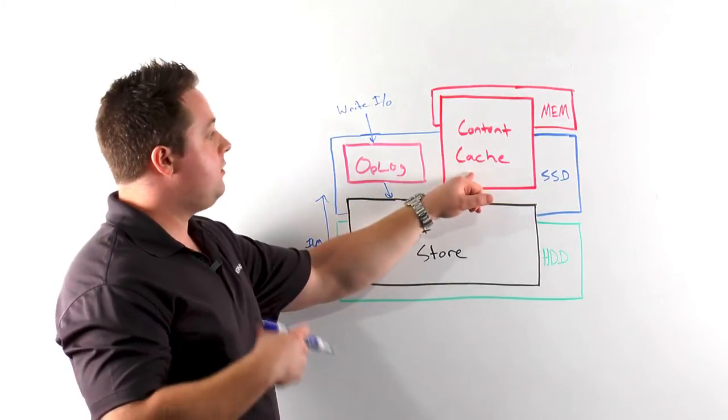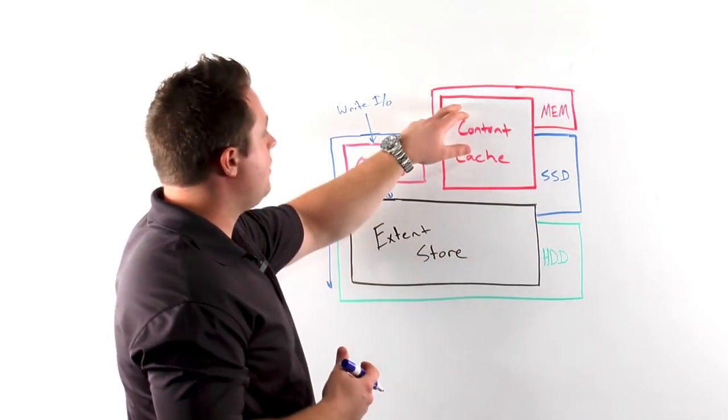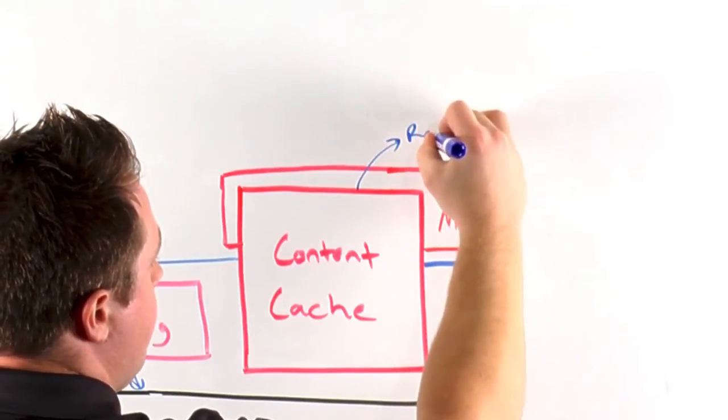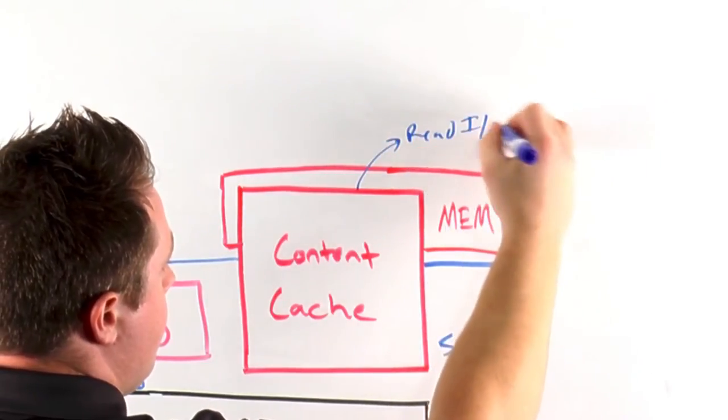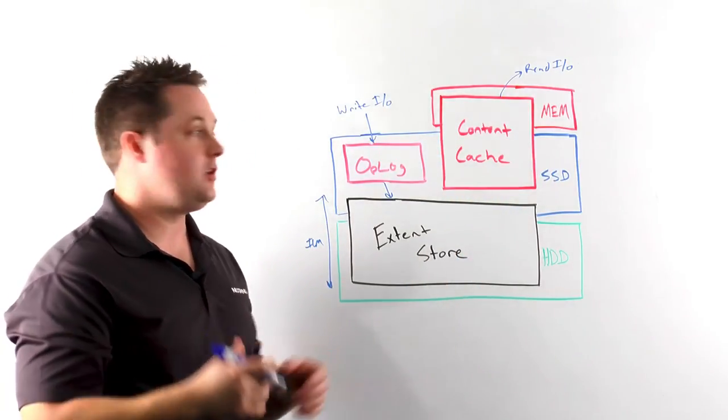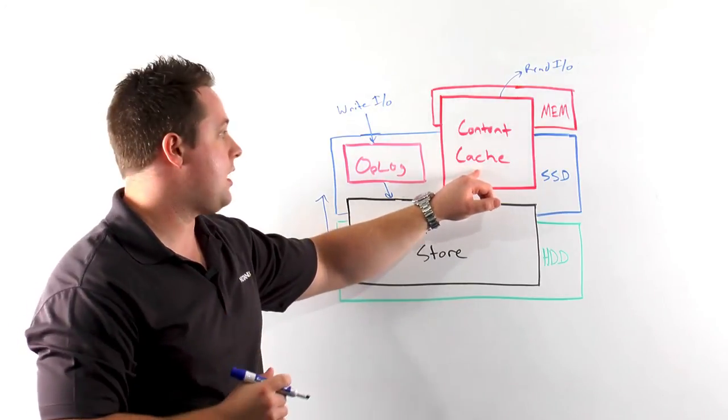On the read side, we have a deduplicated read cache which we call our content cache. The content cache spans both memory and SSD and is there to facilitate all read I/Os. The content cache is deduplicated, so any virtual machines accessing or requesting the same chunk of data will have only one copy of that data stored within the cache.